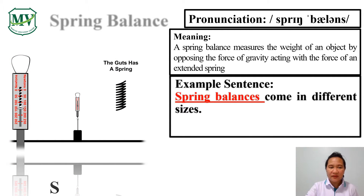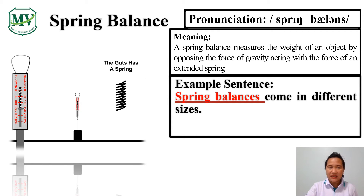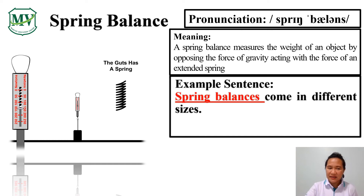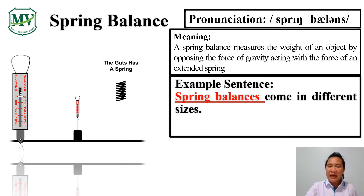Next word: spring balance. A spring balance measures the weight of an object by opposing the force of gravity acting with the force of an extended spring. Example sentence: spring balances come in different sizes.